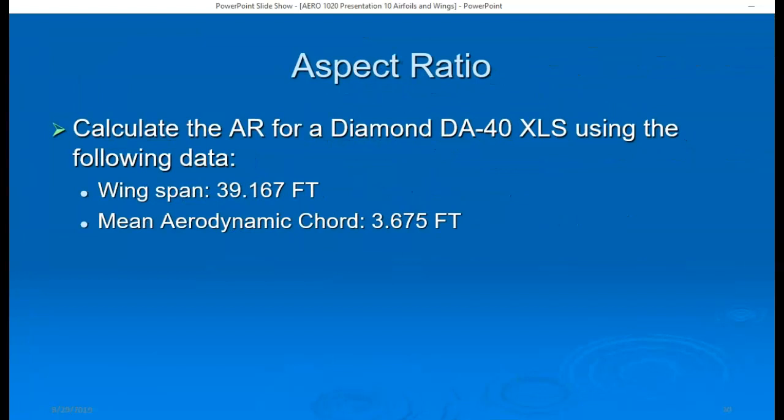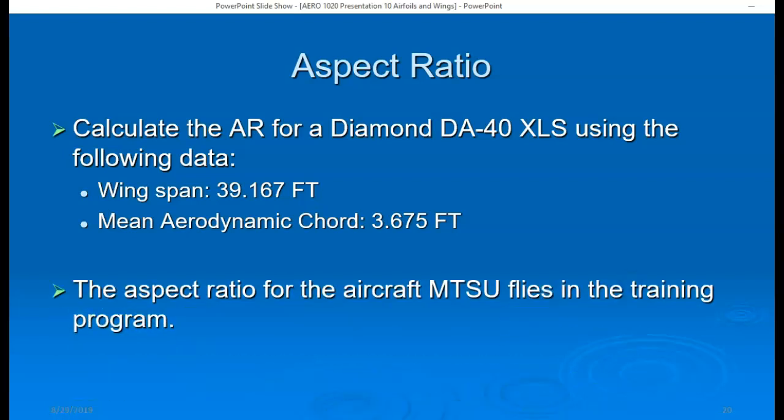The aspect ratio for a Diamond DA40 can be calculated by taking the wingspan of 39.167 feet and dividing that by the average mean aerodynamic cord of 3.675 feet. So the aspect ratio of the Diamond DA40 is 10.66. In this case, we've taken the wingspan and divided it by the average or mean wing cord.